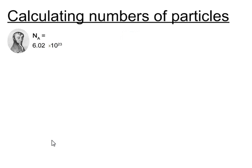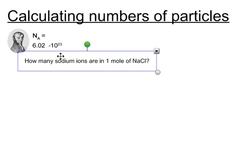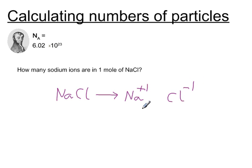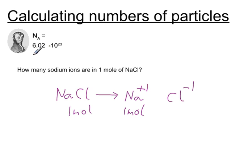Now let's look at some questions involving ions. So how many sodium ions are in one mole of sodium chloride? Sodium chloride is an ionic compound. It is made out of two types of ions: the sodium ion and the chloride ion. So if we start off with one mole of sodium chloride, each sodium chloride will split up into two ions, so we will make one mole of sodium ions. Remember that one mole is equal to Avogadro's number of particles. So that's your answer.